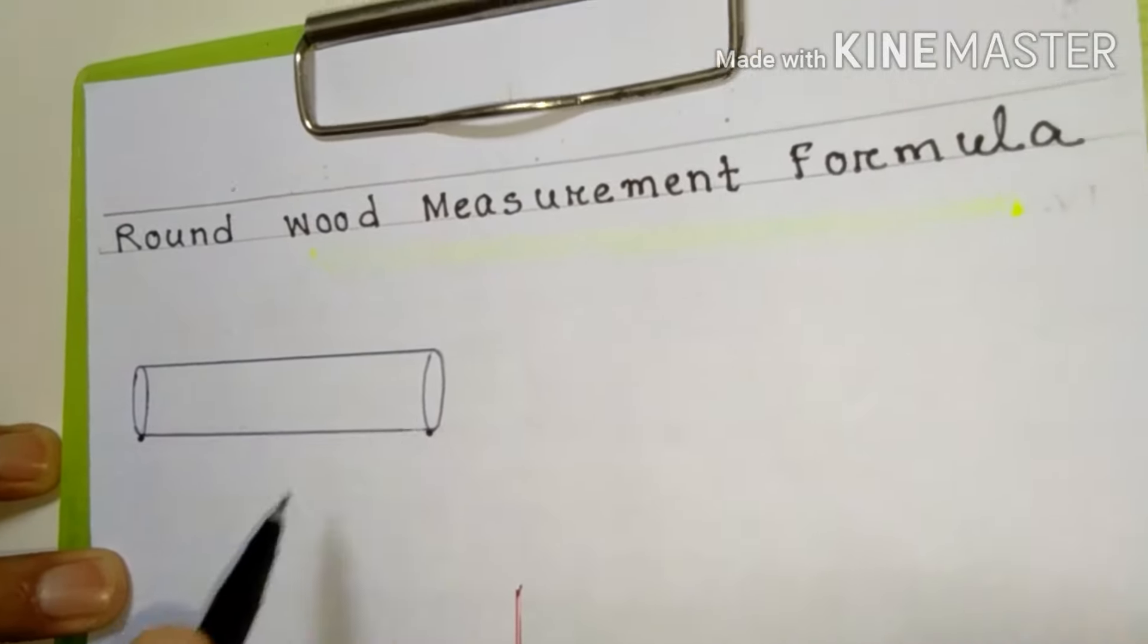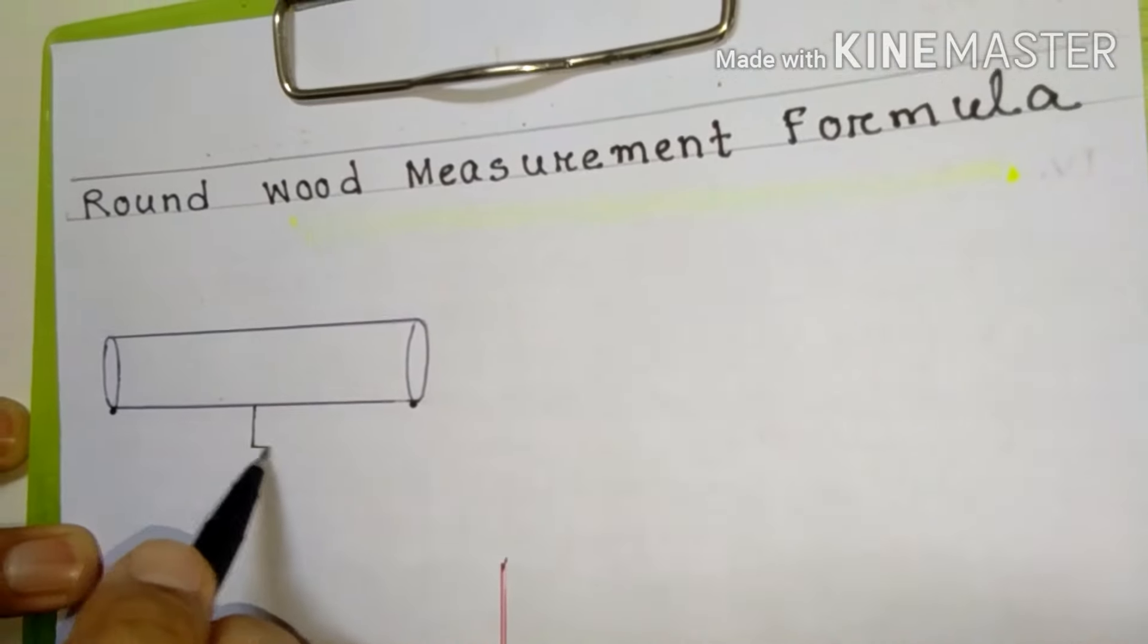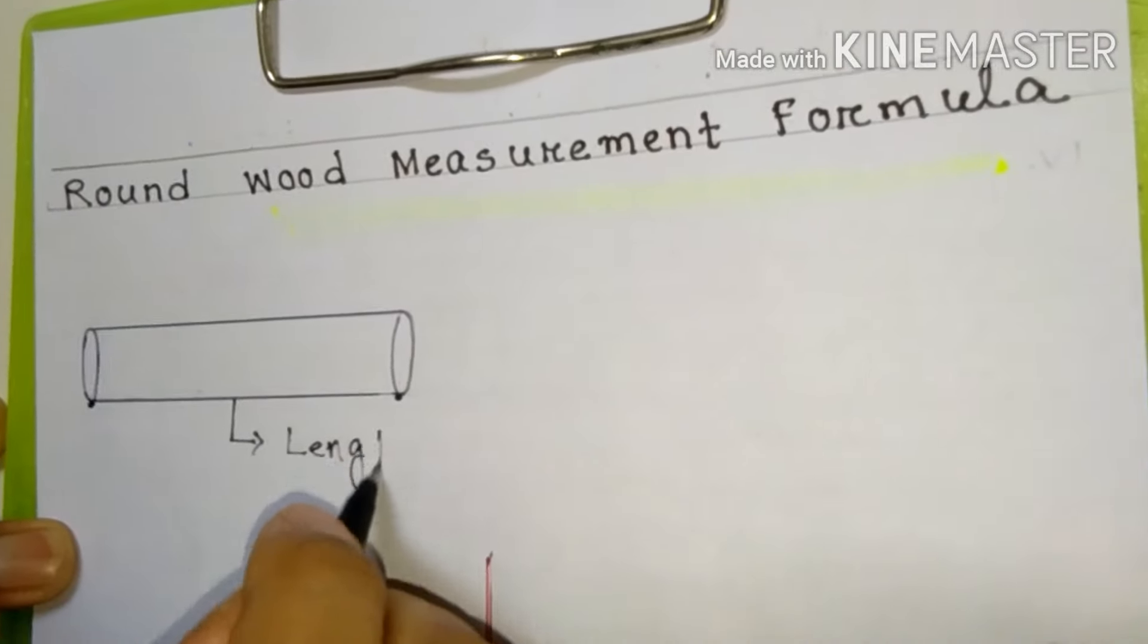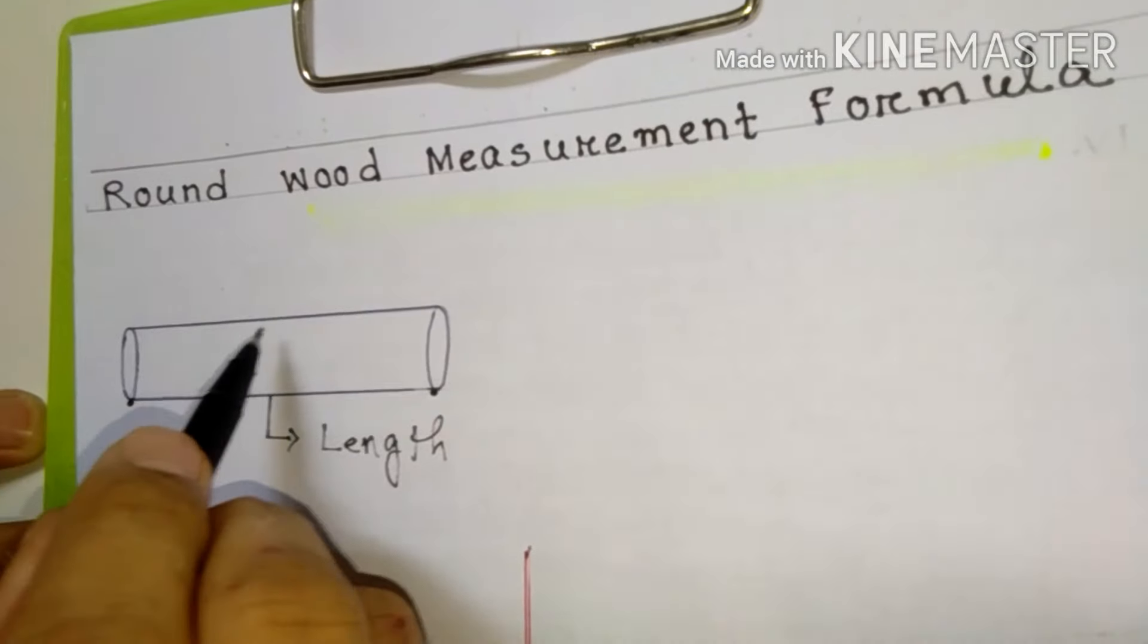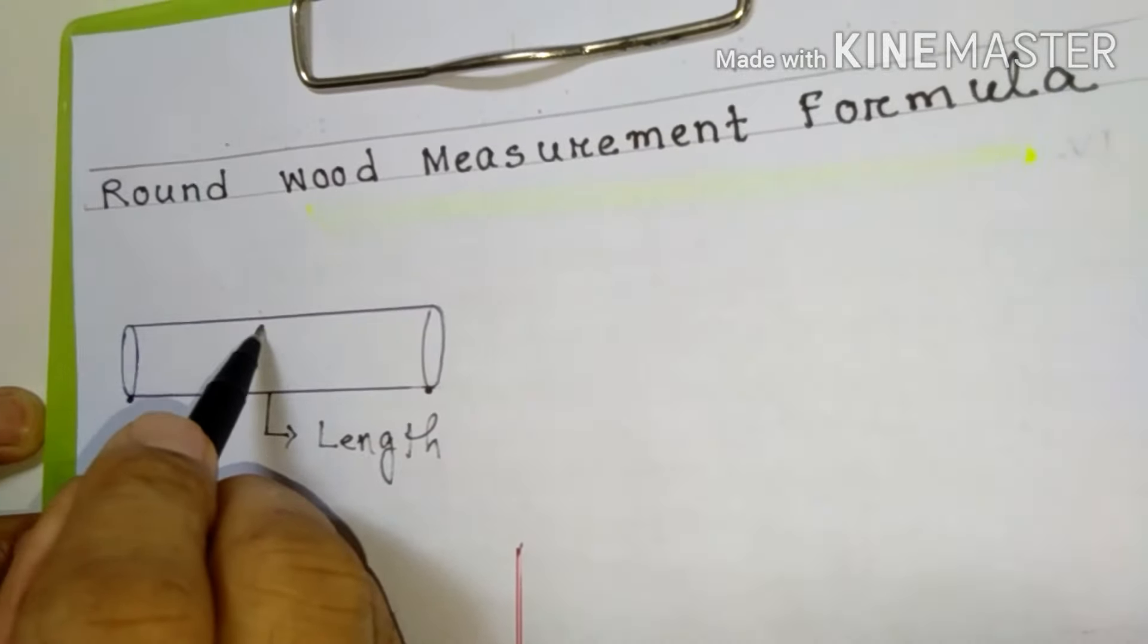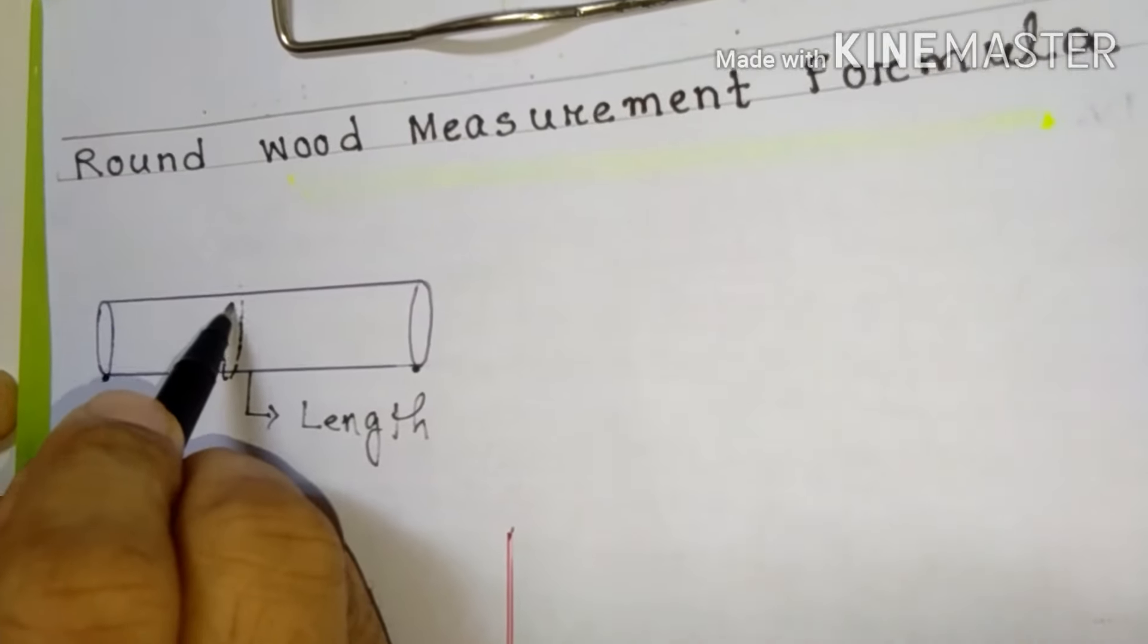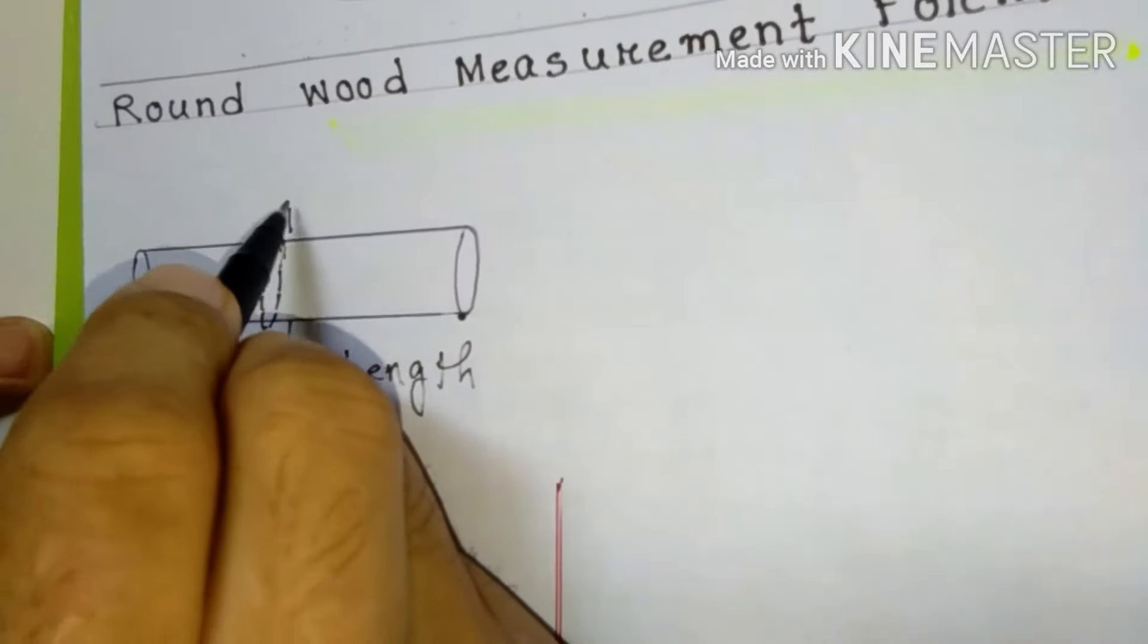Length from where to where? From here to there, we can find out the length. And circumference - in a round thing we have to take one measurement tape and measure here. This is the circumference we have to measure, the round thing.